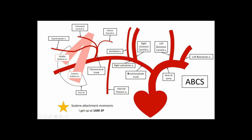As the subclavian artery passes the lateral border of the first rib, it becomes the axillary artery. Notice that the subclavian artery doesn't give a branch called the axillary artery — the right subclavian artery becomes the axillary artery once it passes that landmark. This paradigm of an artery changing its name at a certain landmark will be true of much of the upper extremity.